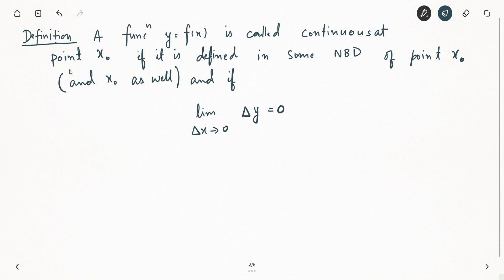Looking at this definition again: a function y = f(x) is called continuous at point x₀ if it is defined in some neighborhood of x₀ — meaning in the interval (x₀ − ε, x₀ + ε) — and if as Δx tends to 0, Δy also becomes 0.